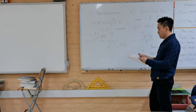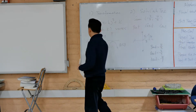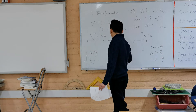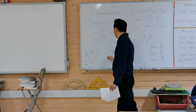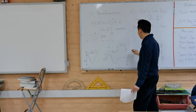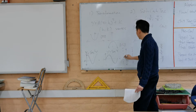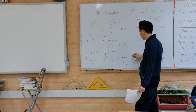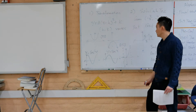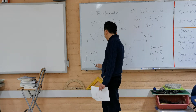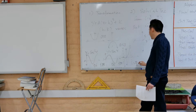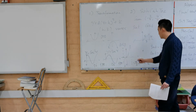Make sure you understand the parent graphs for sine, cosine, and tangent. The parent graph of cosine is like a bell curve, and sine is like a roller coaster. One cycle for cosine and sine goes from 0 to 2π. For tangent, one cycle goes from negative π/2 to π/2, but the vertical asymptotes are not included.